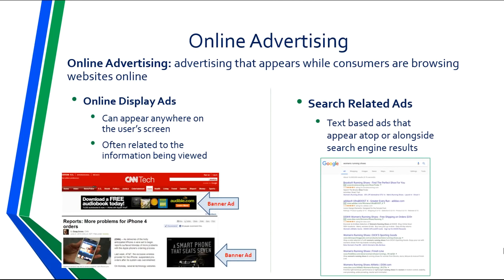Another form of online advertising is search-related ads — text-based ads that appear atop or alongside search engine results on sites such as Google, Yahoo, and Bing. Studies show that consumers do not go past the first page of Google when looking for information, so advertisers can purchase keywords from a search site to guarantee that their web link will be displayed when a consumer searches for those keywords. Online advertising is comprised of both display ads and search ads.